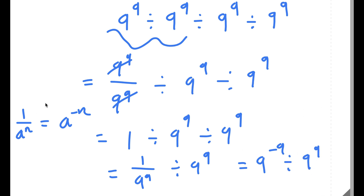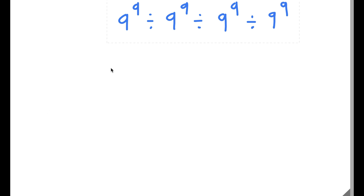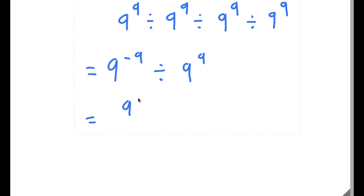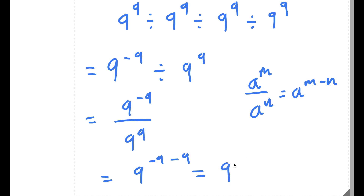Now I have 9 to the power of negative 9 divided by 9 to the power of 9. This is the same thing as 9⁻⁹ over 9⁹. Using the rule a to the power of m over a to the power of n equals a to the power of m minus n, this gives 9 to the power of negative 9 minus 9. Negative 9 minus 9 equals negative 18, so I have 9 to the power of negative 18.